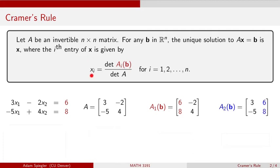Namely, the ith entry in this column vector of solutions is going to be given by the determinant of the matrix that we get when we replace column i of matrix A with vector b, and we're going to divide that by the determinant of the original matrix A.